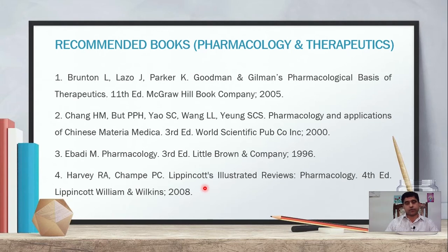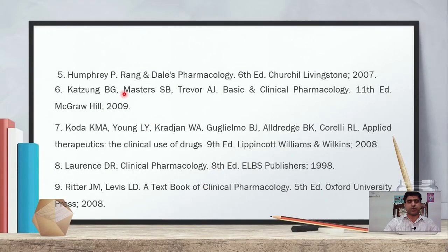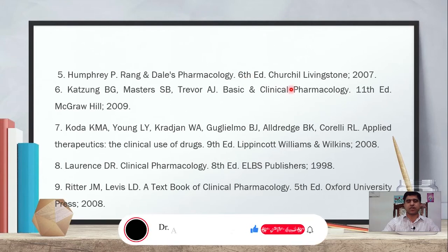This syllabus was made in 2013 by HEC and has not been revised since. Humphrey P — Rang and Dale's Pharmacology — a very commonly studied book. The 6th edition is listed here, which is an older edition; the 8th edition is now available. Published by Churchill Livingstone, 2007.